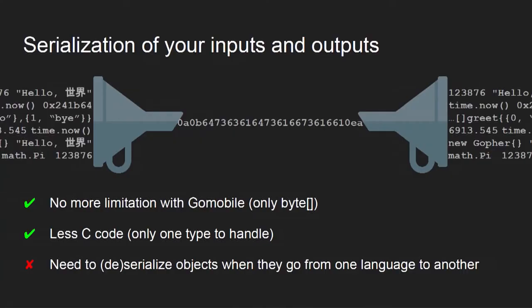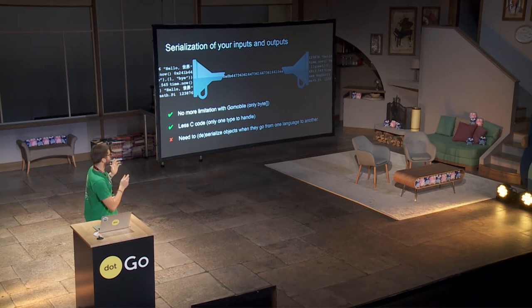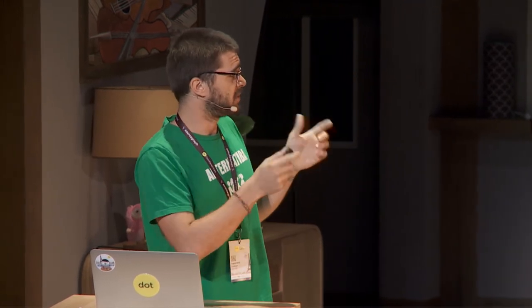There's one thing though: from Go to Python, every time you add a new method signature, it's going to be hard because you will have to write all the memory management for your new data types. One solution to this is to use serialization — meaning you will handle only strings in and out of your API. This means you won't have any limitation with Go mobile anymore, and you will have to write much less C code. You will produce handling for only one type of data, but you will have to implement serialization and deserialization.